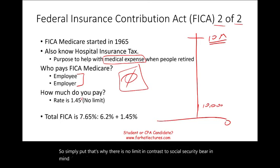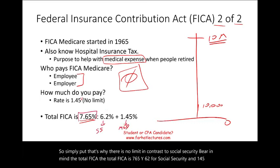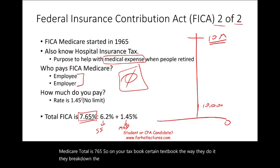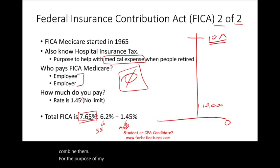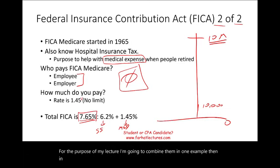The total FICA rate is 7.65% — that is 6.2% for Social Security plus 1.45% for Medicare. Some textbooks break them down separately and some combine them. For this lecture both approaches will be shown. Remember that 7.65% is multiplied by 2 in total because the employer also pays 7.65%.